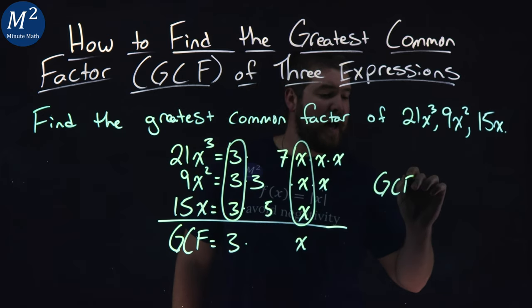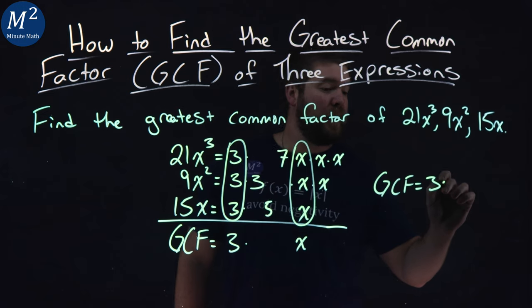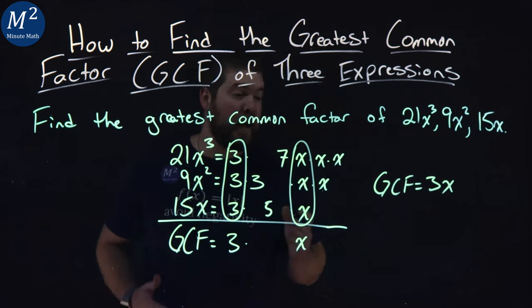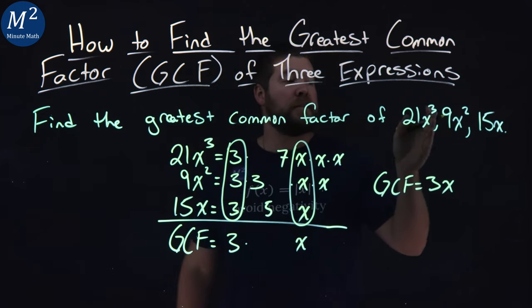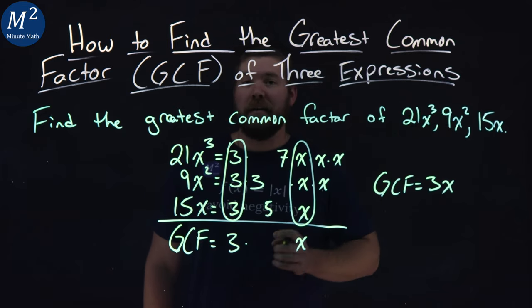Right there. And so the GCF of these three expressions is just 3 times x, or 3x. So again, the GCF of 21x cubed, 9x squared, and 15x is 3x.